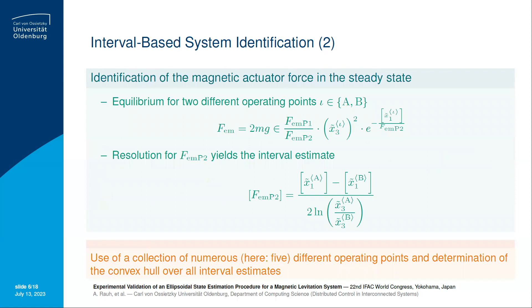Now in order to identify the system parameters, especially for the magnetic actuator force, we are considering the system firstly in a steady state. That means we take into account an underlying control loop that allows us to stabilize the sphere at a desired constant position, and by comparison of two different operating points, we are able firstly to resolve the corresponding expression for one of the parameters, the parameter FEMP2, which depends in the numerator on the uncertain position variables of both different experiments, experiment A and experiment B.